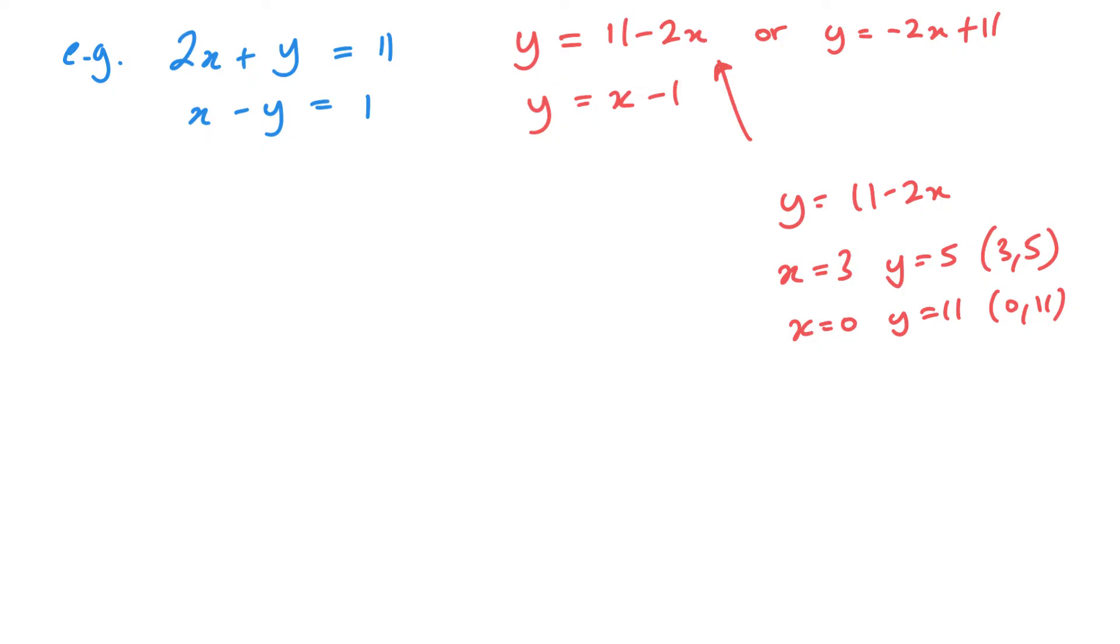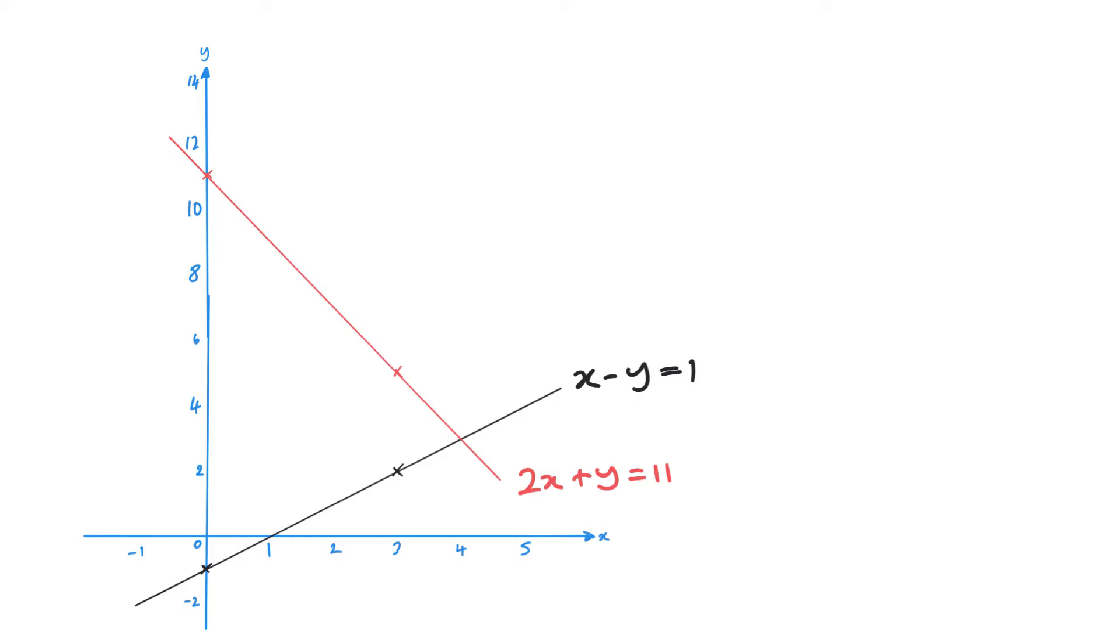Here I have my two graphs drawn. You can see they meet here at the coordinates (4, 3). This is the solution to these simultaneous equations. When you're solving simultaneously and drawing a graph, make it y equals, draw your graph or substitute coordinates in to get the points to plot your graph and then draw it. Where your two graphs intersect is the solution.